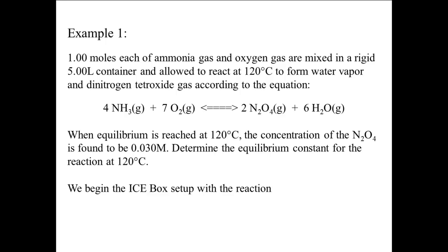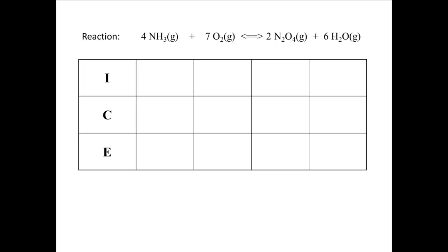We begin the ICE box setup with the reaction: 4 NH3(g) plus 7 O2(g) in equilibrium with 2 N2O4(g) plus 6 H2O(g). We have our 3 rows and 5 columns.